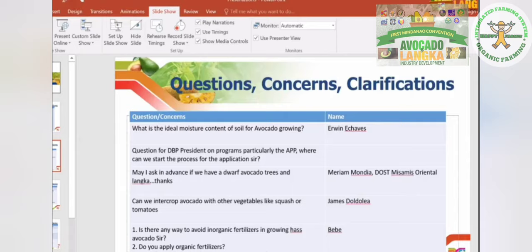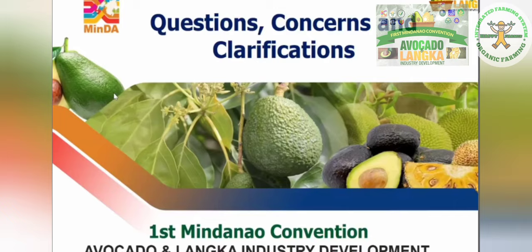Can we intercrop avocado with other vegetables like squash or tomatoes? Yes. I do it in my farm — in between my langka trees, I planted buko pandan since the distance between trees is wide. The recommended spacing is 8x8 meters, so you can still plant vegetables in between. In fact, our plan in the highlands of Bukidnon is to encourage vegetable farmers to plant avocado in undulating areas not suitable for vegetables, and cultivate vegetables in the flat areas.